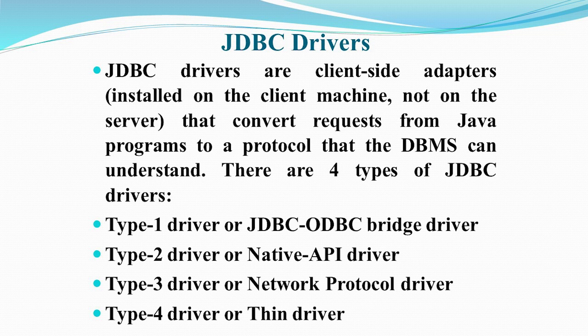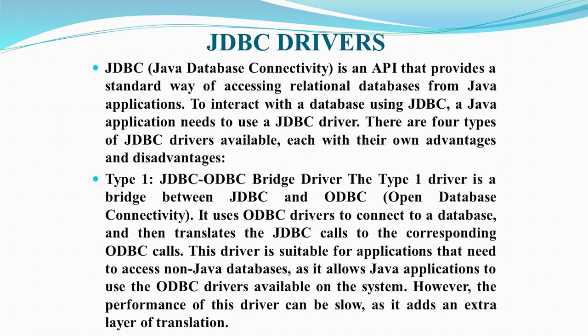The four types are: Type 1 — the JDBC-ODBC bridge driver, which we also used in the example from the last session. Type 2 — the native API driver. Type 3 — the network protocol driver. Type 4 — the thin driver. JDBC drivers provide a standard way of accessing relational databases from Java applications, and each type has its own advantages and disadvantages.